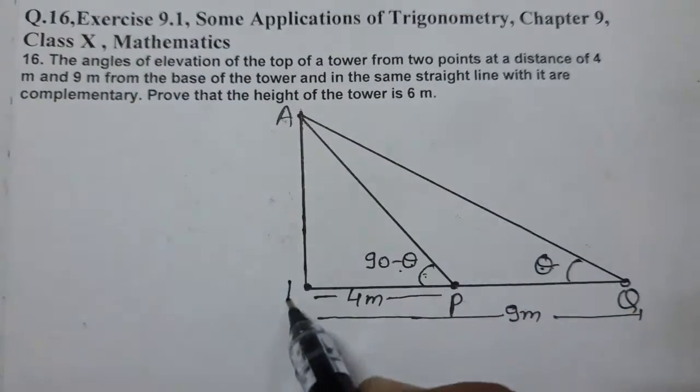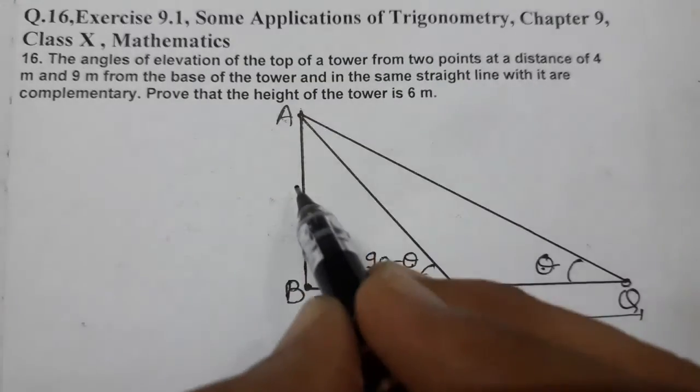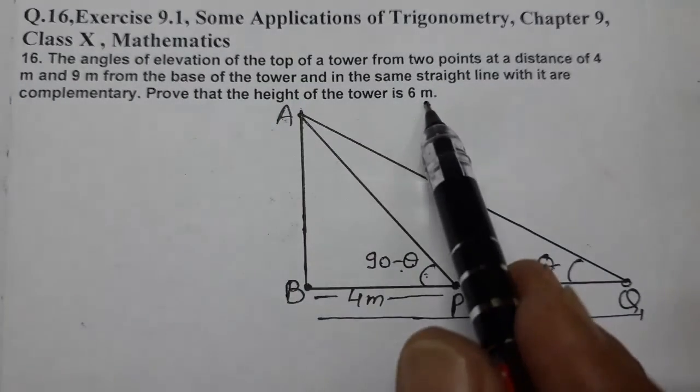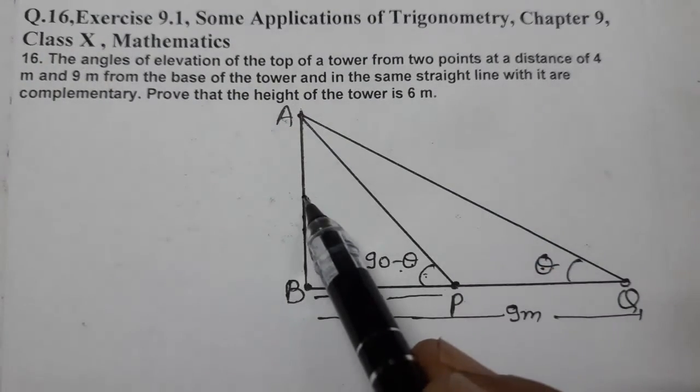We'll name this AB, the height of the tower.